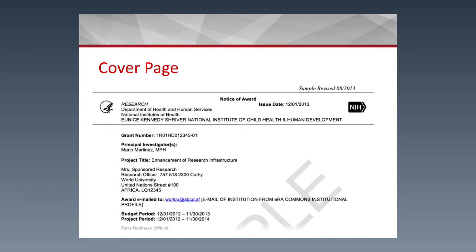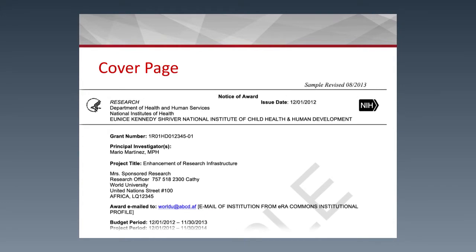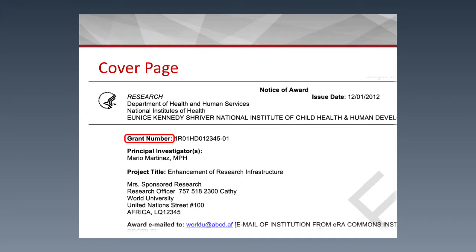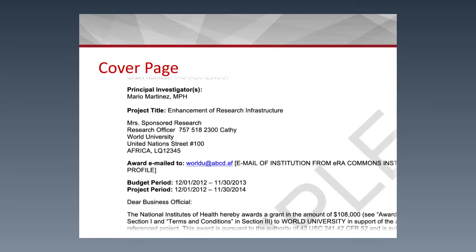The cover page provides an overview of the grant data. It includes the issue date, the institute that issued the award, the grant number, the principal investigator's name, the project title, the budget and project periods, and the terms of acceptance. It also indicates where the Notice of Grant Award was sent.